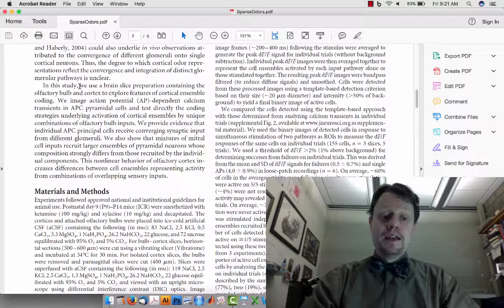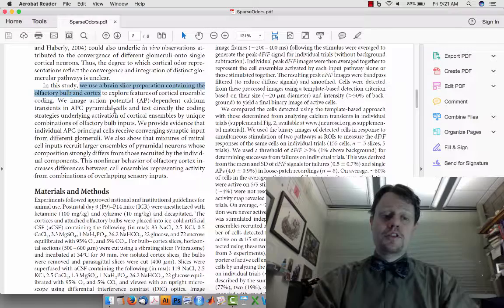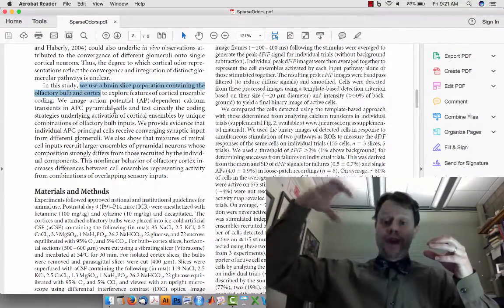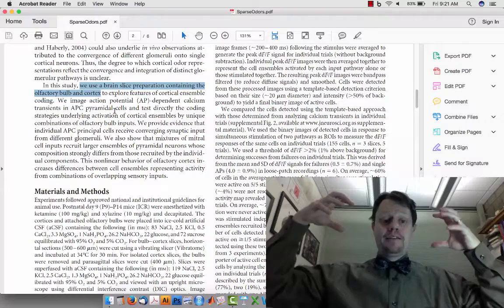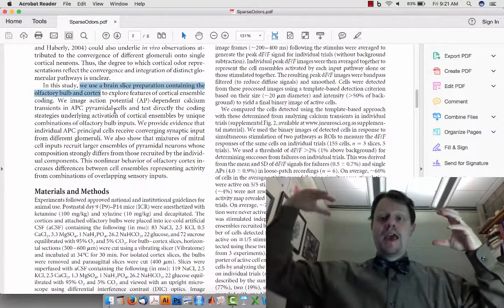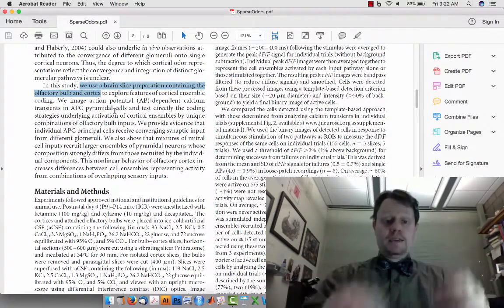So in this study they use brain slice preparation containing both the olfactory bulb and the piriform cortex. They've got a chunk of brain that has the olfactory bulb still intact and the connection between them is maintained.